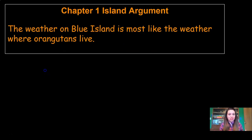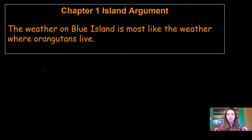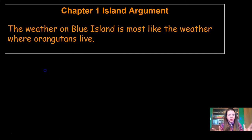We're going to write it together using all the evidence that we've collected, compared, evaluated, and sorted. We've done a lot with this evidence, and now we're ready to make a recommendation to the Wildlife Protection Organization. Whenever you start a scientific argument, you always want to start out with your claim first — no secrets or mysteries, just tell them what you think. So here it is: the weather on Blue Island is most like the weather where orangutans live. We've shared our claim — remember that it's Claim B from that list.